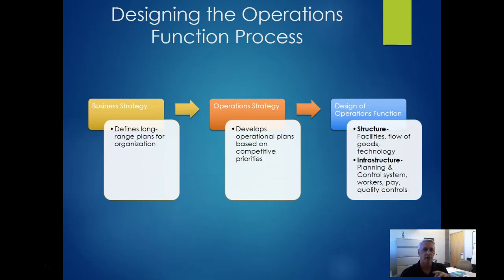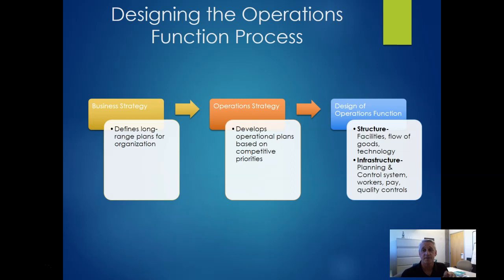Our structure includes our facilities, the flow of goods — materials coming in, goods going out — and if we're providing services, resources and knowledge coming in with services going out. There's also the infrastructure: what does our planning look like, do we have control systems, how do we deal with workers, pay, and quality controls? All those features get down to the real nuts and bolts.